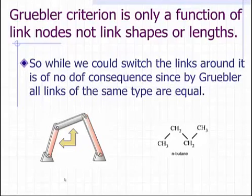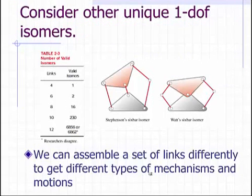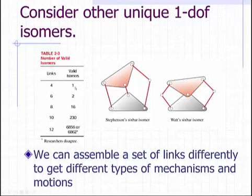This is similar to our chemistry analogy: if we were to switch one carbon atom with another, we would not have made any difference — we would still have n-butane. Now consider other unique one-degree-of-freedom isomers. We have already seen the case of four links, where there was only one valid combination. With six links, there are actually two different isomers — two different ways that six links can be combined to create a one-degree-of-freedom mechanism.